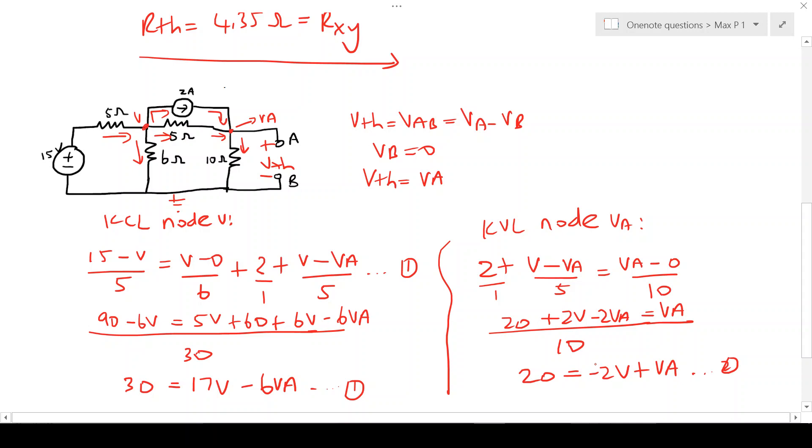Minus 2VA going to the other side will give you 2VA plus VA, this should be 3VA. That's our second equation.